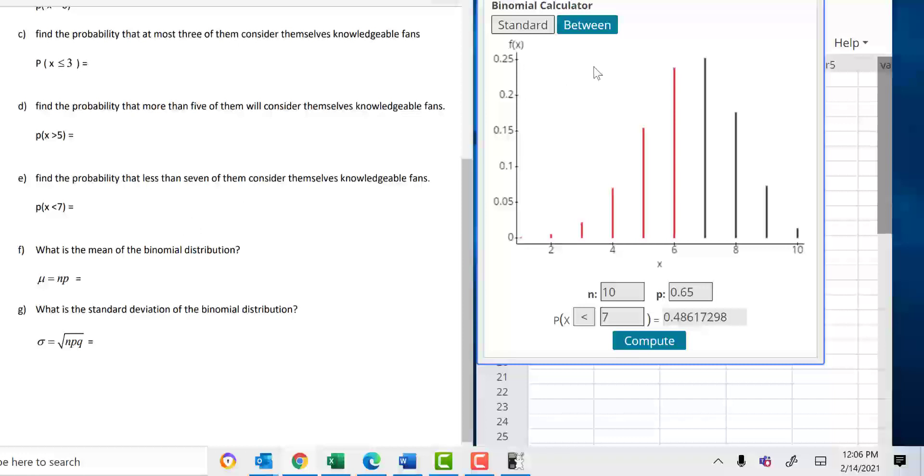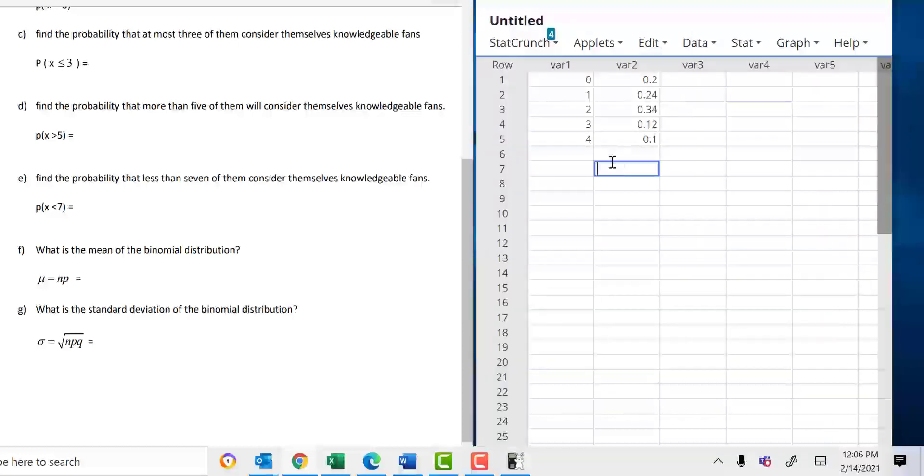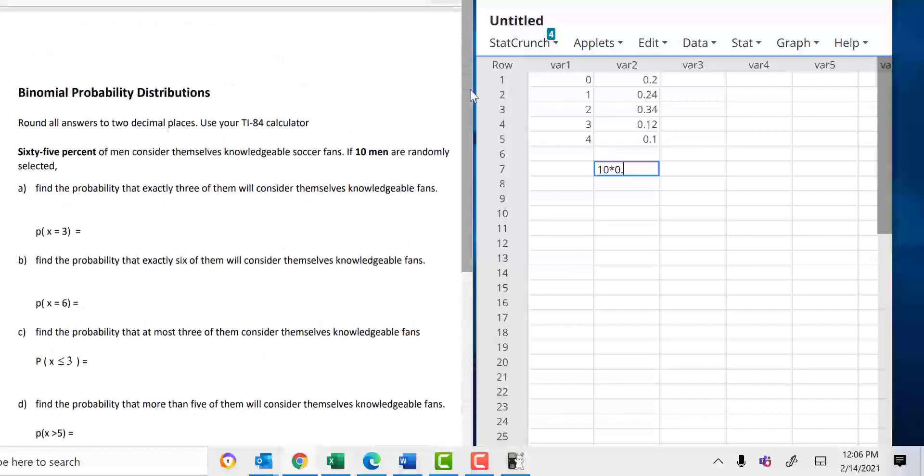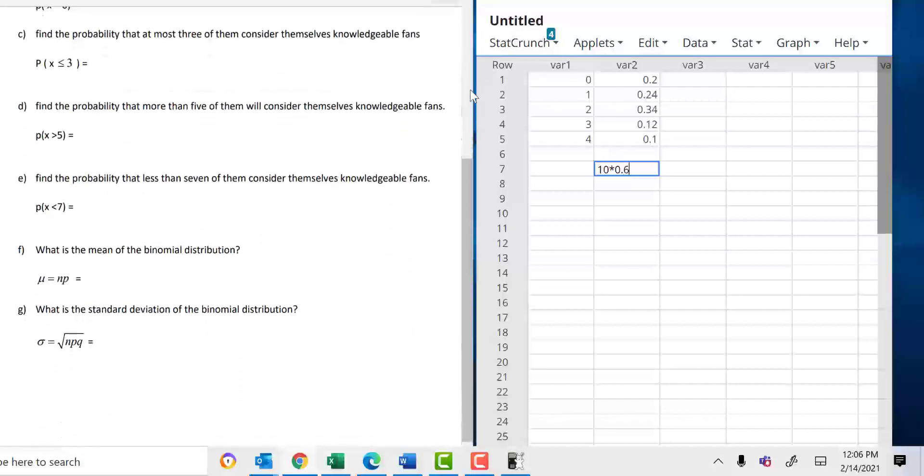The last question, find the mean of the binomial distribution. The calculator doesn't do this for you, but it's very easy. There's a formula for the mean. So for the mean of the binomial distribution, just take N, which is 10, and multiply it by the probability of success, 0.65. So the answer should be 6.5. For the standard deviation, it's the square root of NPQ. So you will do the square root of 10 times 0.65. What is the Q? Q is the probability of failure. So if probability of success is 0.65, Q will be 0.35.